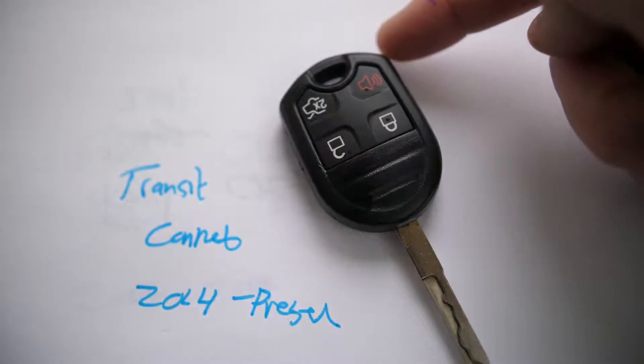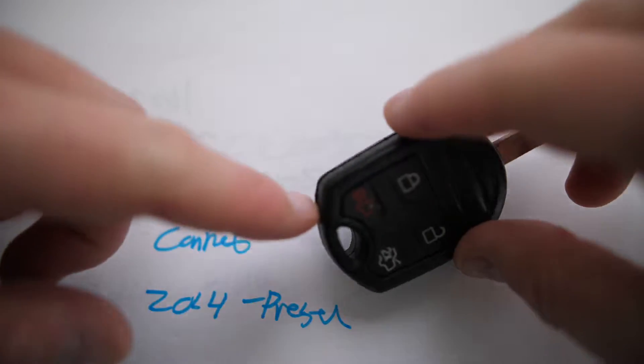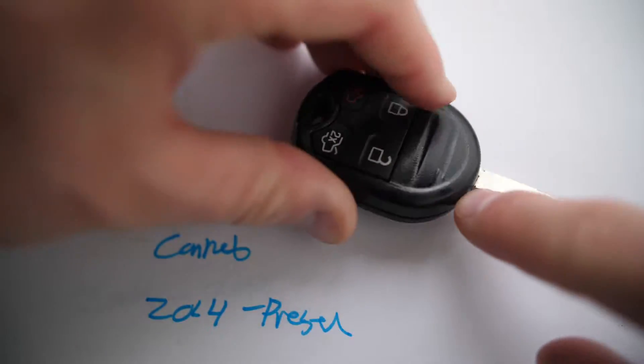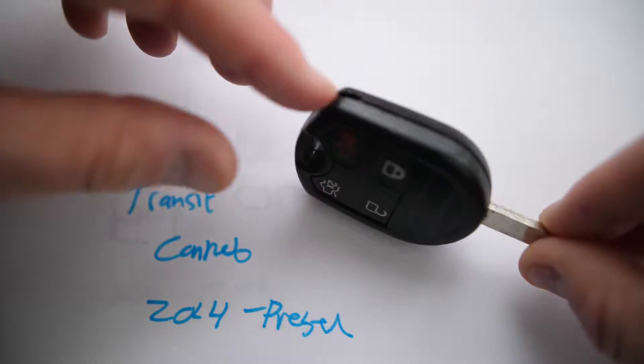So in the upper right here where I'm pointing, there's a little notch, and we need to get some separation between the two pieces of this key fob. You can see just kind of a line that goes all the way around the fob.